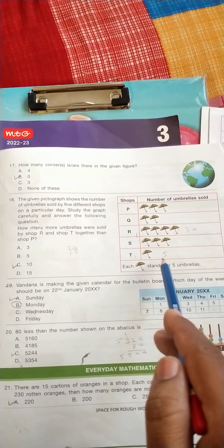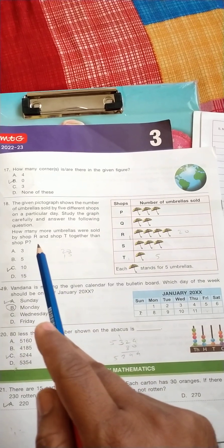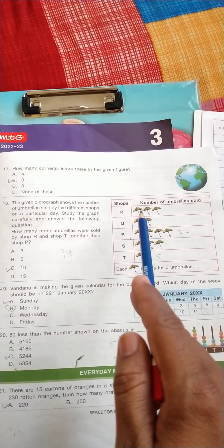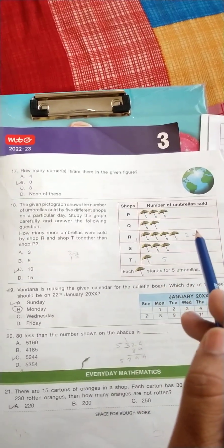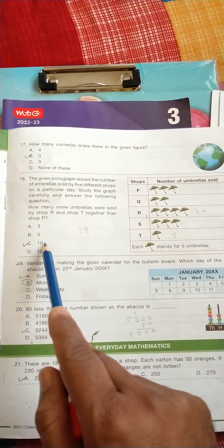Minus P - in P there is 3 umbrellas into 5 means 15, so 25 minus 15, the correct answer is C, 10.